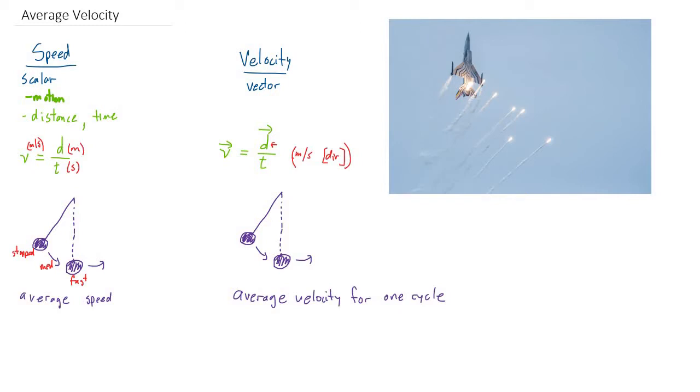The pendulum starts at the left, goes through its motion all the way to the right, and swings back to the left again. We'll call that the initial position of our pendulum. Over that cycle, what was the displacement?